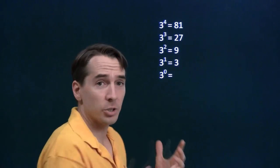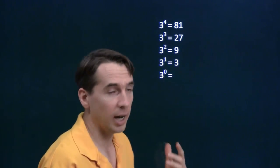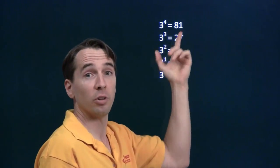Now when we go up, 3 to the 1st is 3, and multiply by 3, you get 3 squared is 9, 3 cubed is 27, 3 to the 4th is 81.